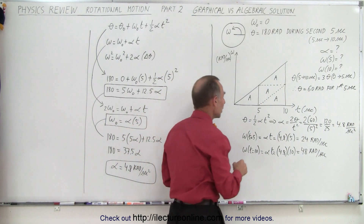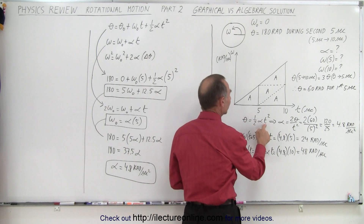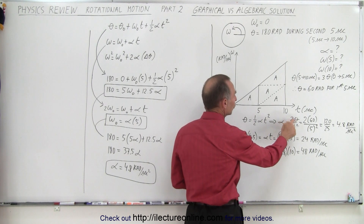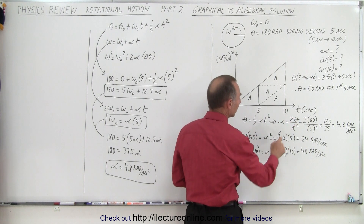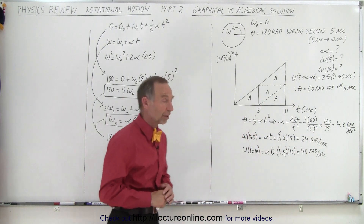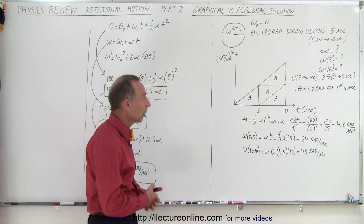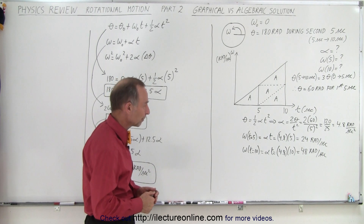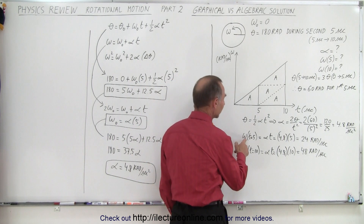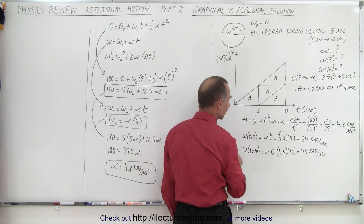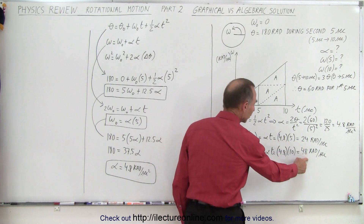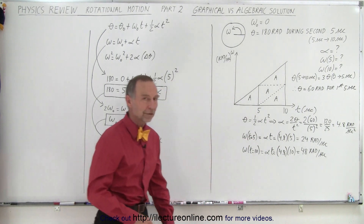Using the equation that distance equals one-half alpha times t squared, and knowing the distance during the first five seconds is 60 radians: two times 60 radians divided by five seconds squared gives us alpha equals 4.8 radians per second squared. From that we get our angular acceleration. Then the angular velocity is acceleration times time, so after five seconds we're moving at 24 radians per second, and after ten seconds at double that — 48 radians per second.